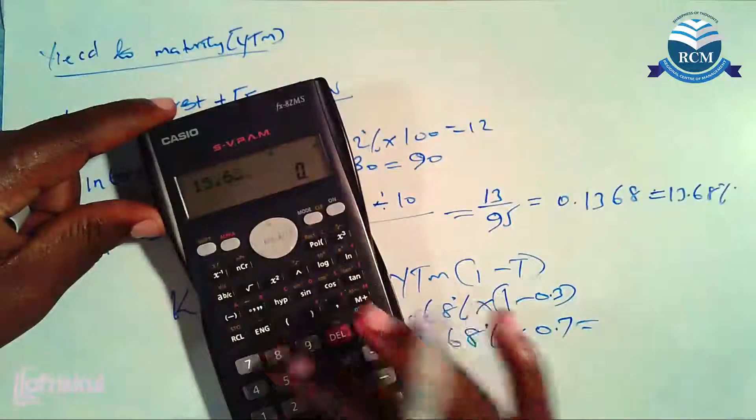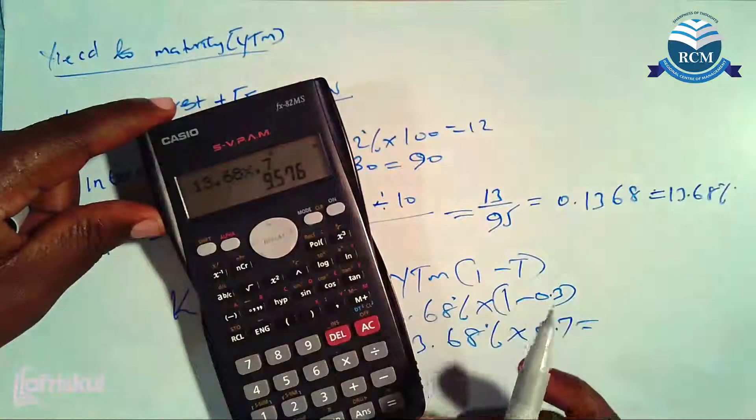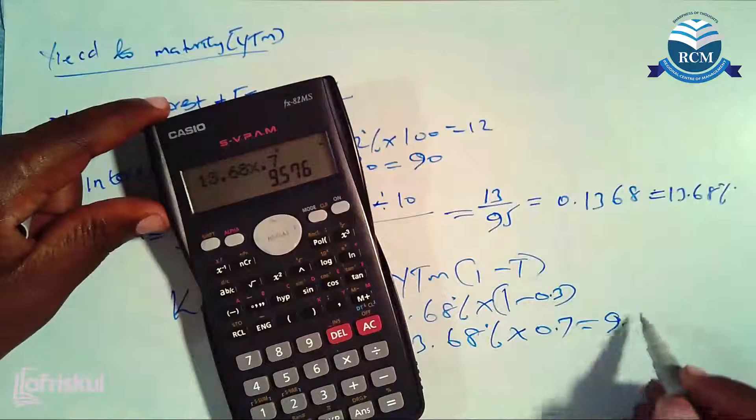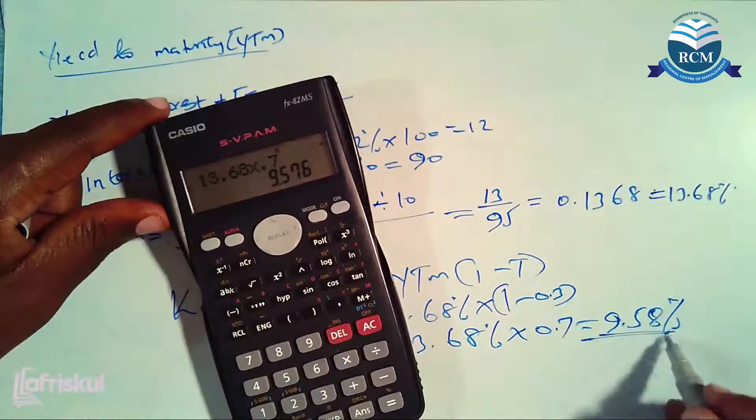Which basically will be 13.68 percent times 0.7. So we have here 13.68 times 0.7 which gives us 9.58 percent, and that is how basically you get to calculate the cost of debt of redeemable bonds.